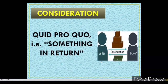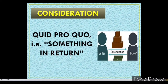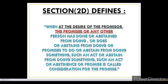Now the question arises: what is consideration? Consideration is something in return. For example, Mr. A sold his car to Mr. B for rupees 50,000. Here rupees 50,000 is consideration for A in return of his car, and for Mr. B the car is consideration in return of the 50,000 he gave to A. So basically consideration is quid pro quo. According to the Indian Contract Act, Section 2 defines: when at the desire of the promiser, the promisee or any other person has done or abstained from doing, this is known as consideration for that promise.